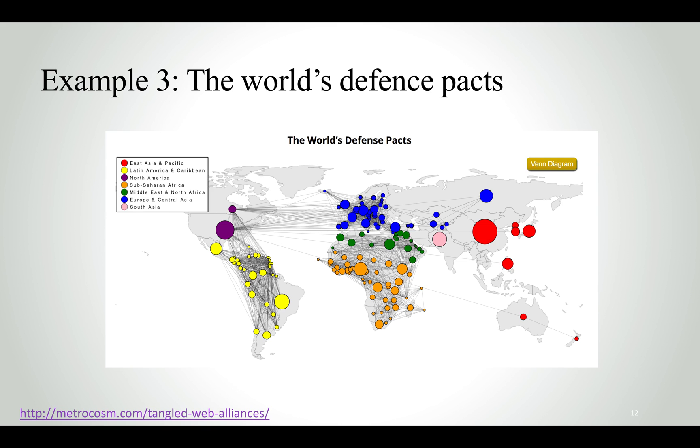Another interesting example is the world's defense pacts. You can see here which country has defense pacts with other countries. You can clearly see that there are clusters of countries together, which makes sense. For example, it makes sense that the European countries have different pacts with each other, the same with some African countries.